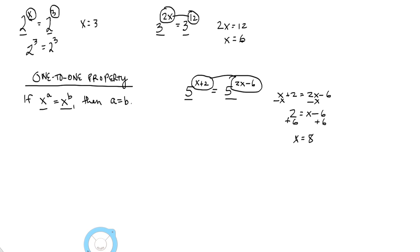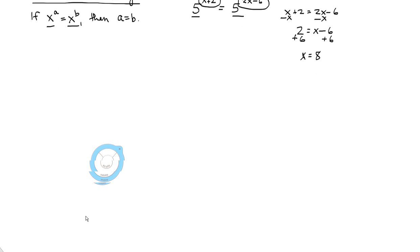Let's do a bunch more of these, and then we'll complicate matters just a little bit. What if I have 4 to the 3x minus 2 equals 4 to the 5x plus 3? Why don't you give this a shot? Go ahead, turn off the video, figure it out, and turn the video back on, and we'll work through it. And hopefully you've got the answer correct.